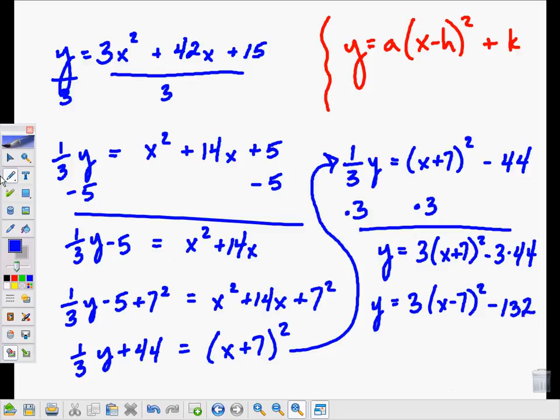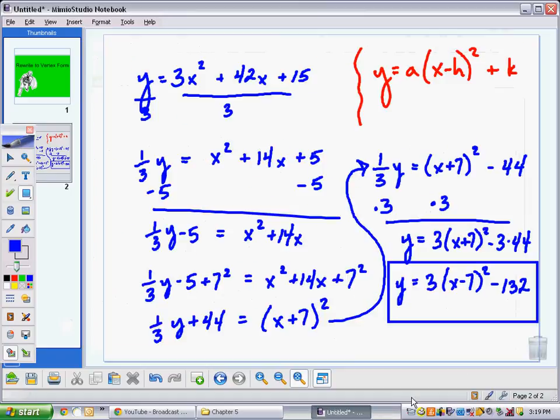There we go. That is now in vertex form. We started in standard form, we ended in vertex form. I hope that helps. Real quickly, again, get a leading coefficient equal to 1, get rid of the old c term by moving it over, complete the square, then bring the stuff back over from the left and rewrite into vertex form. Hope that helps. Enjoy.